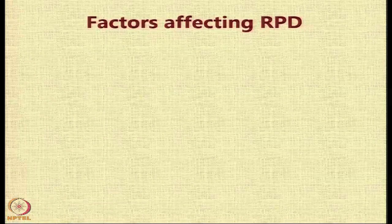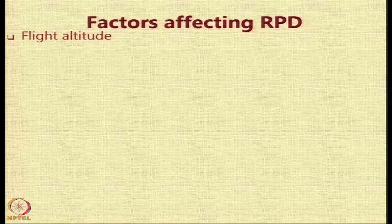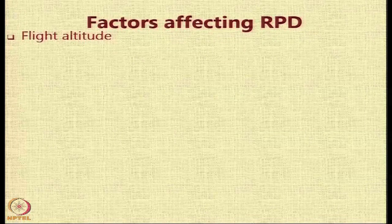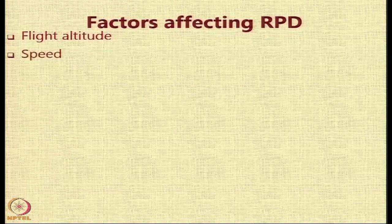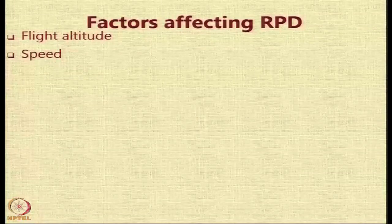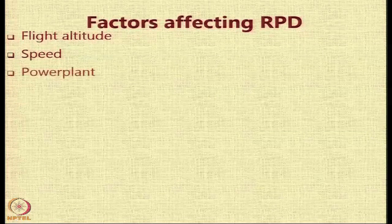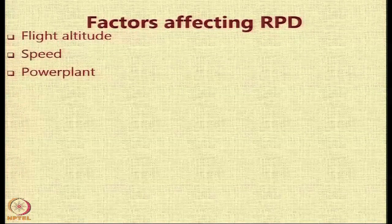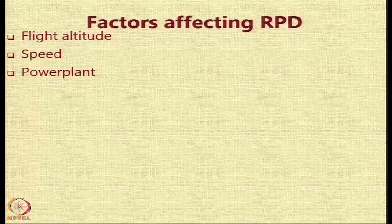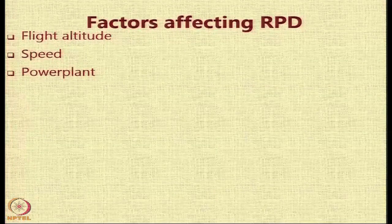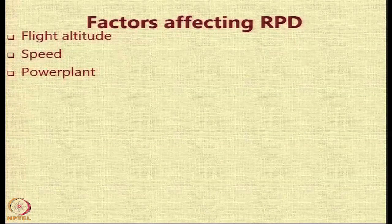Let us now look at some factors that affect the range payload diagram. The first factor is flight altitude, because at different altitudes the aircraft has a different specific range. Then there is speed — there is one speed at which fuel consumption is minimum and another at which the time taken is less, so the speed you fly at affects the range. The type of power plant also matters: the same aircraft can have different versions of power plants, and depending on its efficiency the range payload diagram can change.